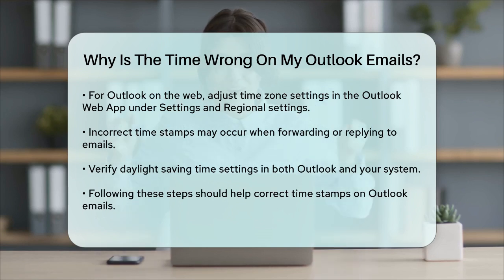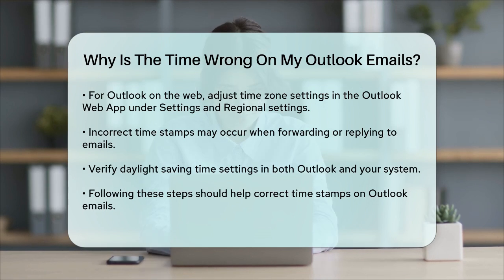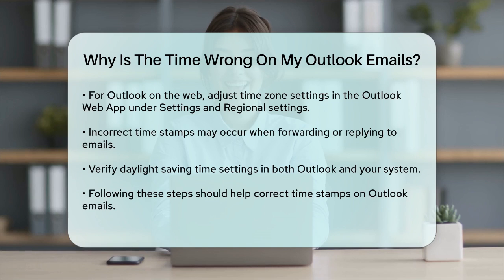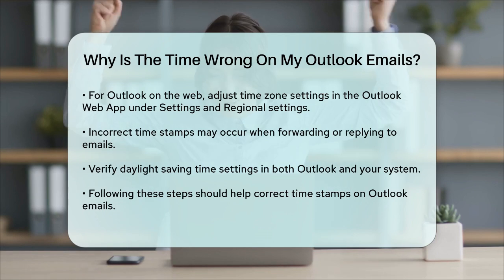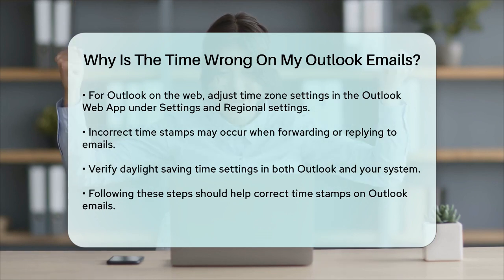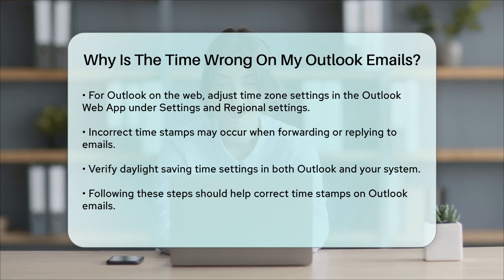In some cases, the problem could be specific to certain actions like forwarding or replying to emails. This might be due to incorrect Daylight Saving Time settings. Verify that your system and Outlook settings are correctly adjusted for DST to avoid any time discrepancies. By following these steps, you should be able to correct the timestamps on your Outlook emails and ensure that everything is in sync. Remember to double-check all your settings, both in Outlook and on your system, to avoid any further issues.